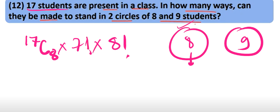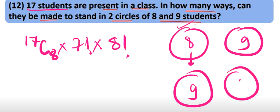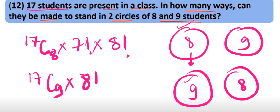So this is the first case. In the second case, what happens here? Suppose 9 is here. First we have 9 people. Select 17C9, then that will be 8 factorial and 7 factorial.